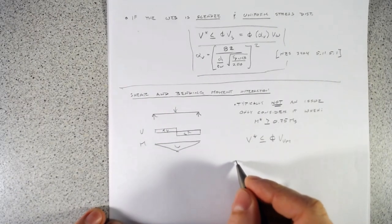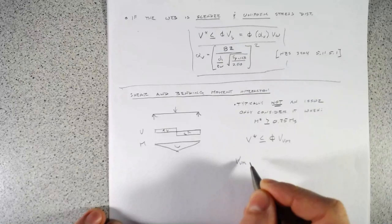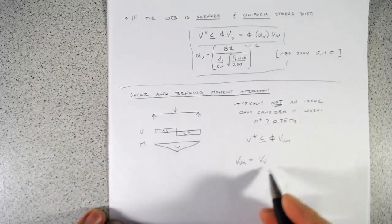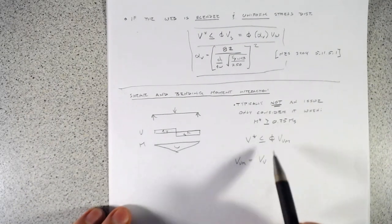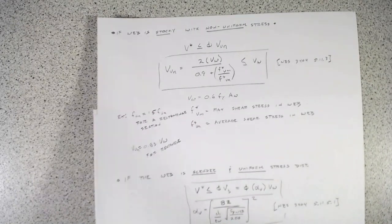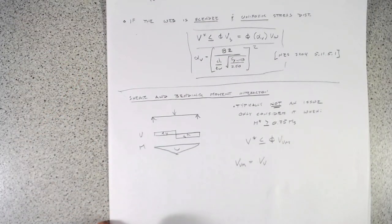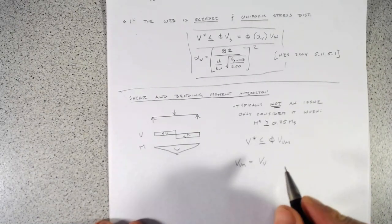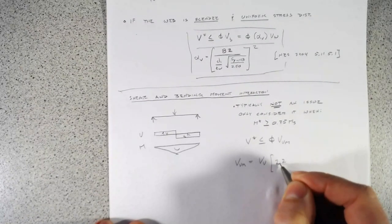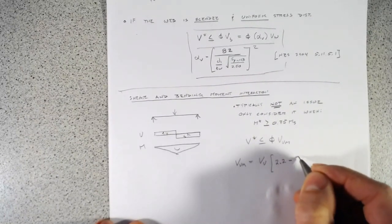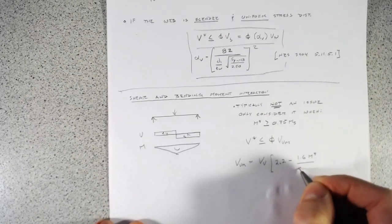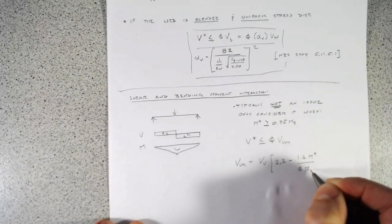The shear-moment interaction capacity is VVM = VV × (2.2 − 1.6 × M* / (φMs)), where VV is your normal shear capacity (Vw, VVN, or Vb as appropriate). This is from NZS 3404 clause 5.12.2.